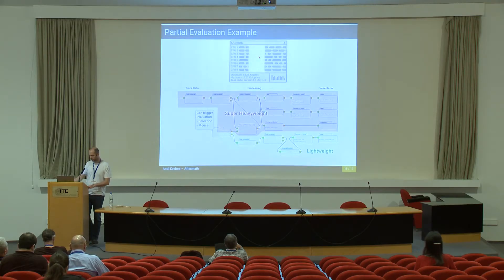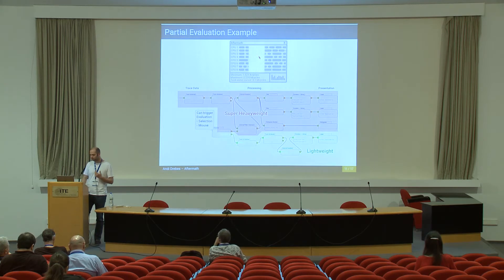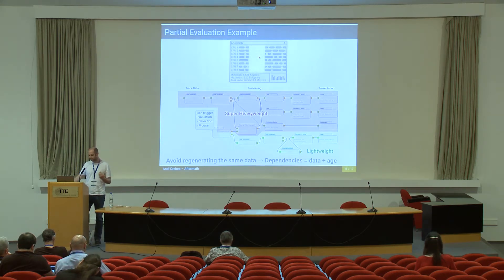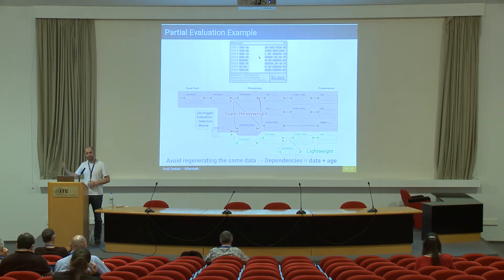The problem that might arise here is that you can have parts of this graph which are super heavyweight and take a lot of time to evaluate, and other parts which are more lightweight. You want to avoid recalculating these heavy parts again and again if they always produce the same data. So you need a scheduler that is able to take into account not only the dependencies between nodes but also the age of the data, and react accordingly. This is where port dependencies come into the game.